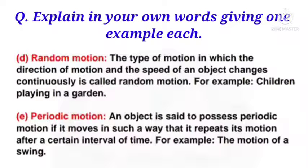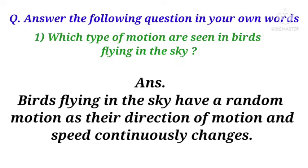Next is fourth, random motion with an example. Fifth is periodic motion with an example. Okay, so please note down this properly. Don't make any spelling mistake. Write it down in your notes.